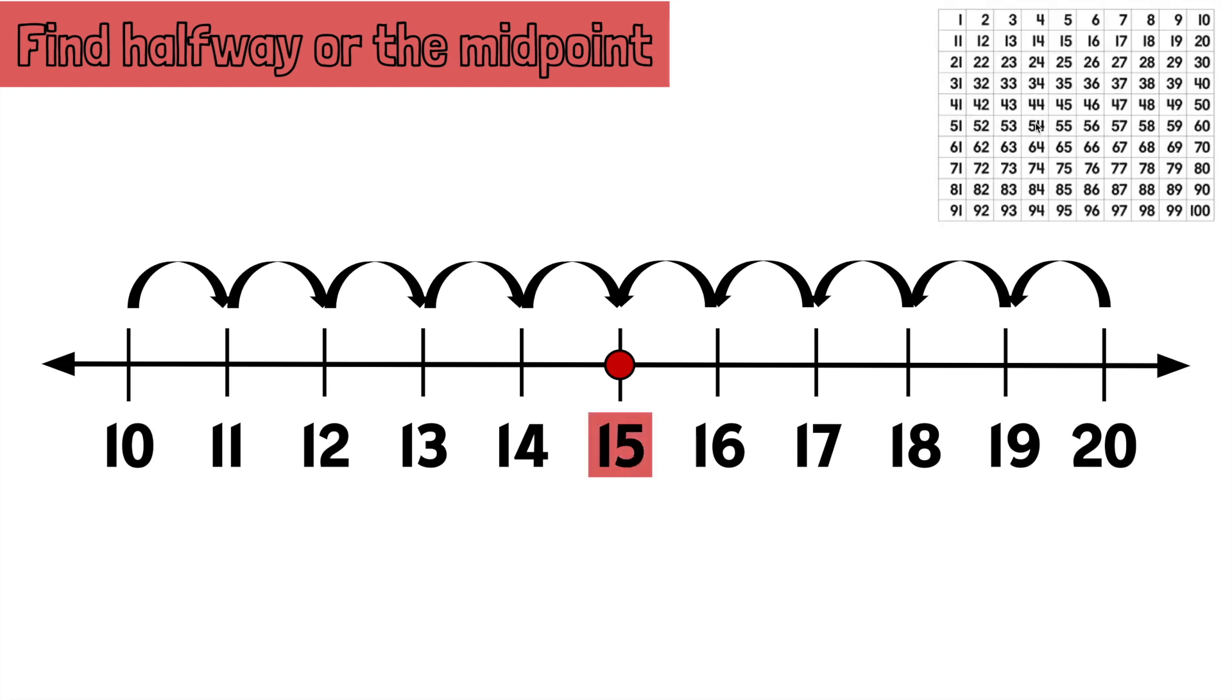Let's take a look at this number chart. Something that's important to remember is that when you're finding the halfway or midpoint between 10s, like 10, 20, 30, 40, 50, and so on, that midpoint will always end in a 5. We notice 15 ends in a 5.